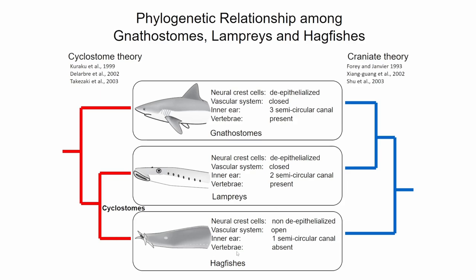In the comparative morphology textbook I introduced to you, hagfish is always located at the basal position of the phylogenetic tree because it has quite strange morphological features. But there are two different theories about early vertebrate phylogeny, especially concerning the hagfish.